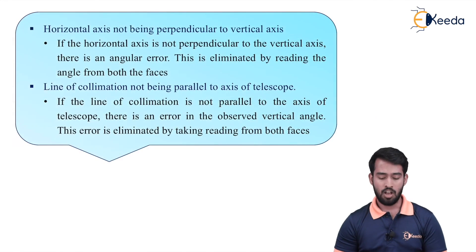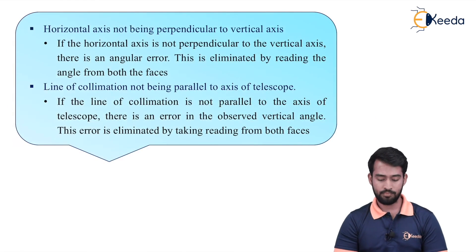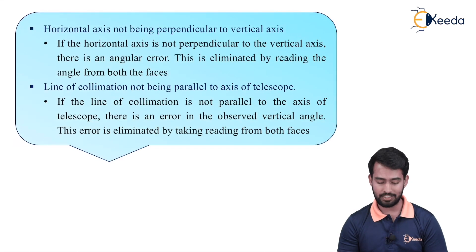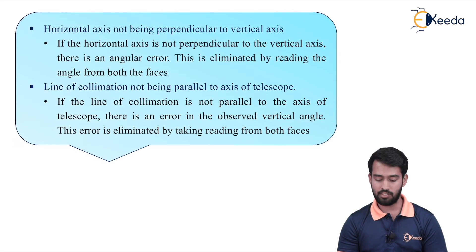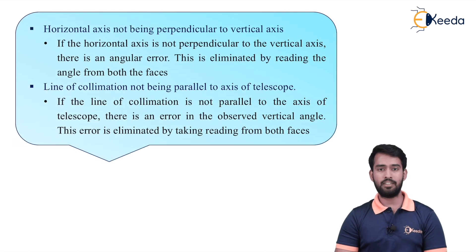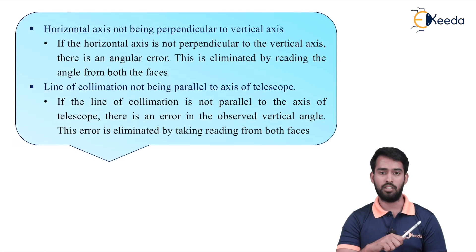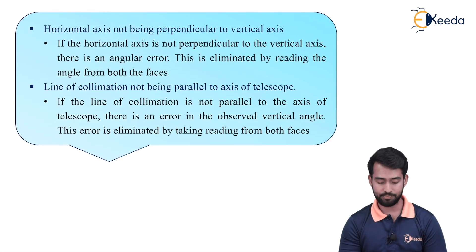Next is the horizontal axis not being perpendicular to the vertical axis. This is a very common error. If the horizontal axis is not perpendicular to the vertical axis, there is an angular error. This is eliminated by reading the angles from both the faces — both the left face as well as the right face.